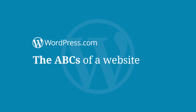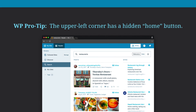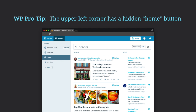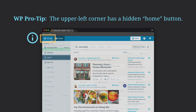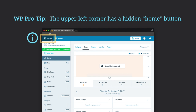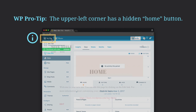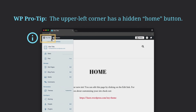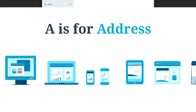Welcome to learning about the ABCs of a website on WordPress.com. Before we get going, an important WordPress pro tip to start with is the hidden home button in the upper left corner. If you ever get lost, click in the upper left corner where it says My Site, or if you have multiple WordPress sites, it will say My Sites. With that first pro tip, we can get started with the ABCs of a WordPress website.